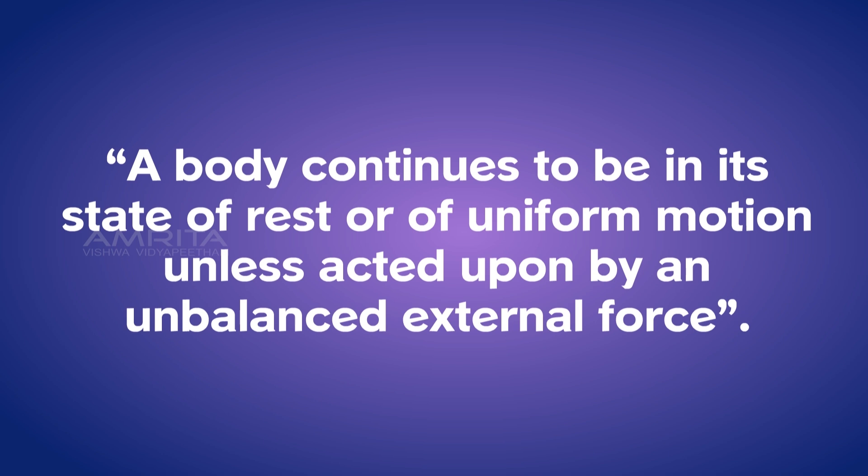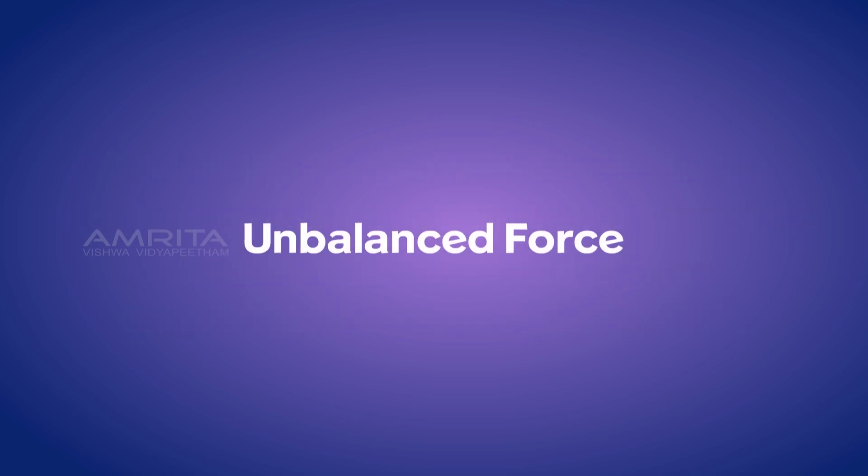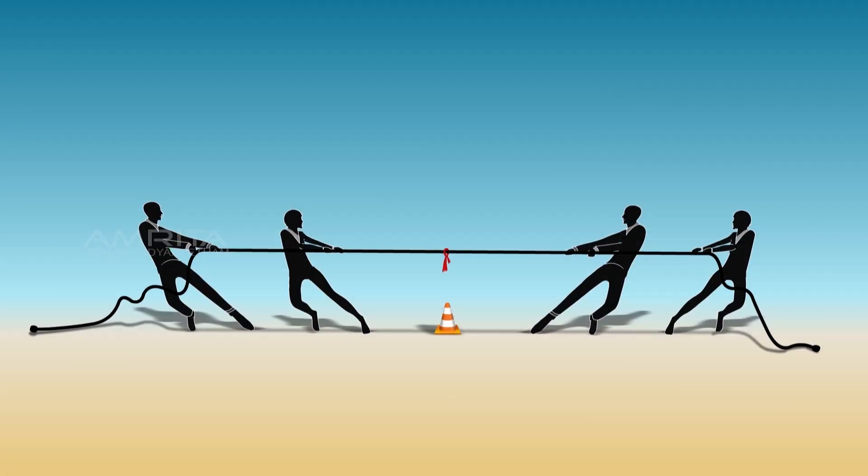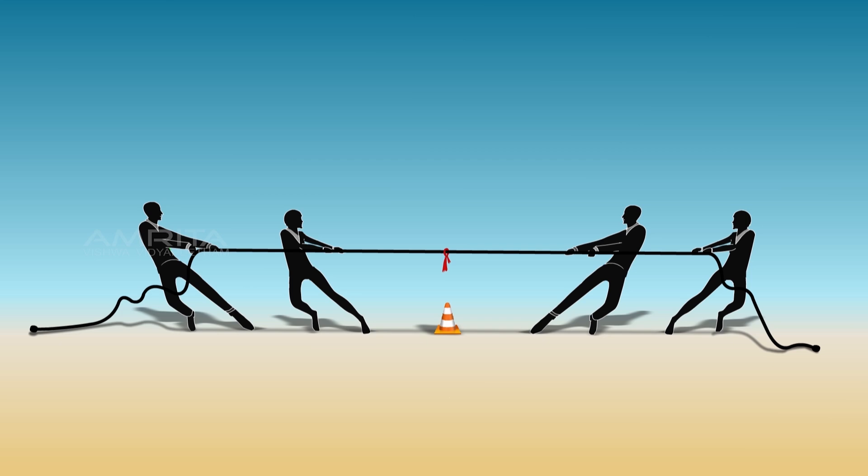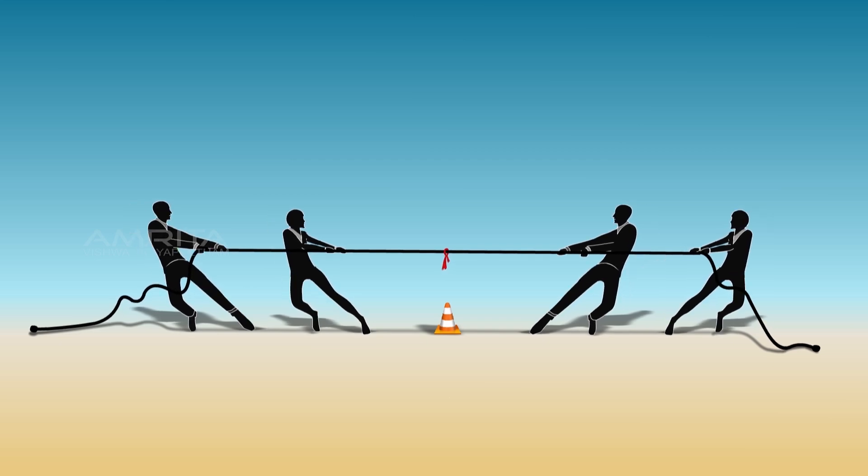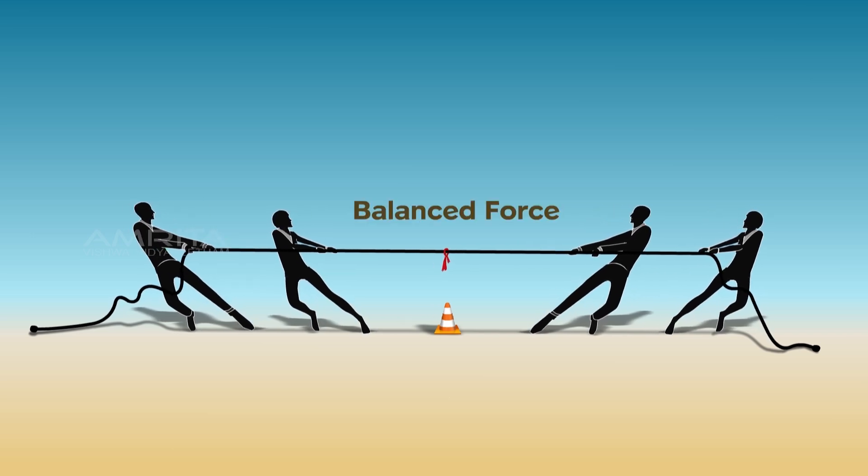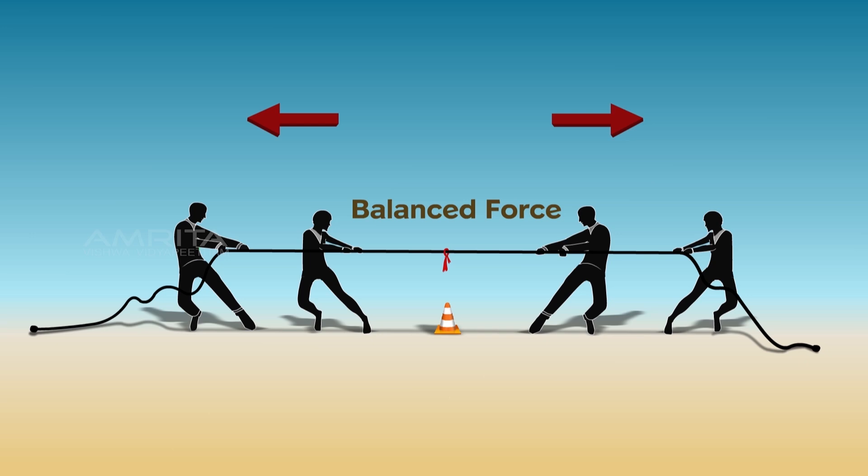To understand Newton's First Law, you need to understand what unbalanced force is. If you have seen a game of tug of war, you would have seen two teams pulling a rope in opposite directions. If the rope doesn't move, the forces applied by the teams are balanced forces, as they are of equal magnitude in opposite directions.